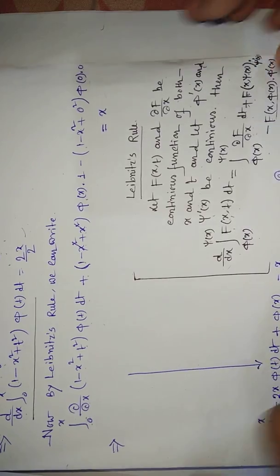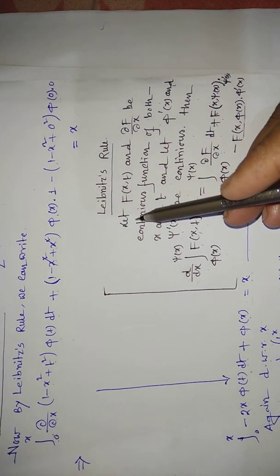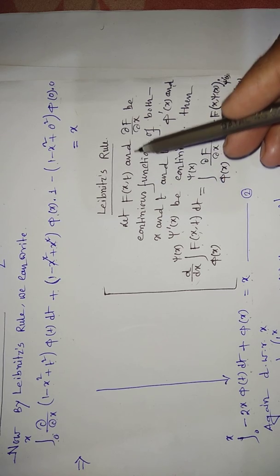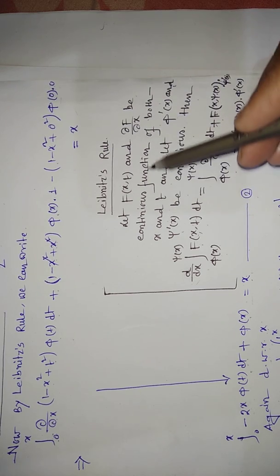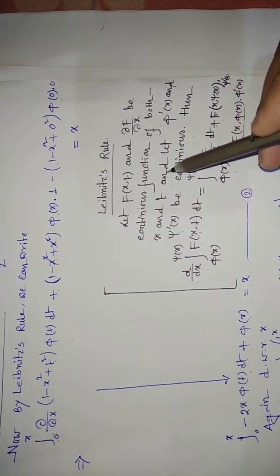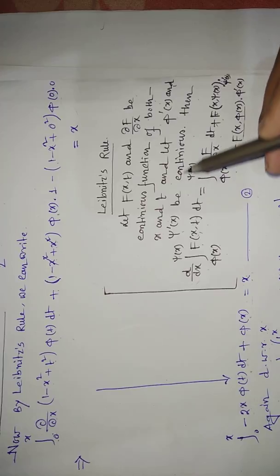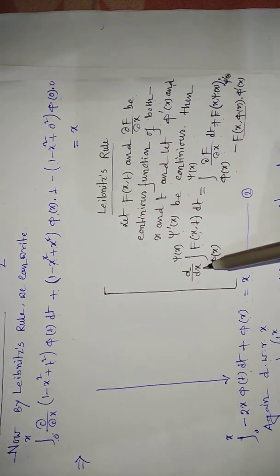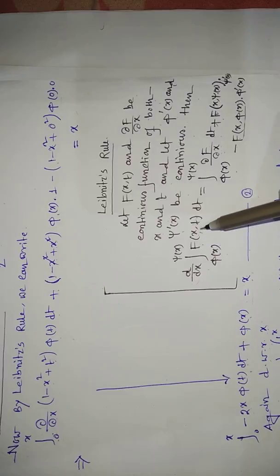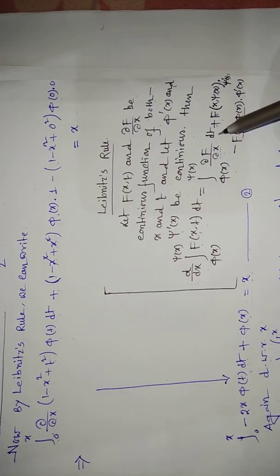The Leibniz rule states: let f(x, t) and ∂f/∂x be continuous functions of both x and t, and let φ'(x) and ψ'(x) be continuous. Then d/dx of the integral from φ(x) to ψ(x) of f(x, t) dt equals the integral from φ(x) to ψ(x) of ∂f/∂x dt...